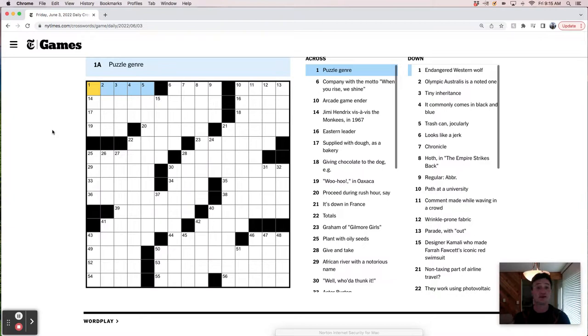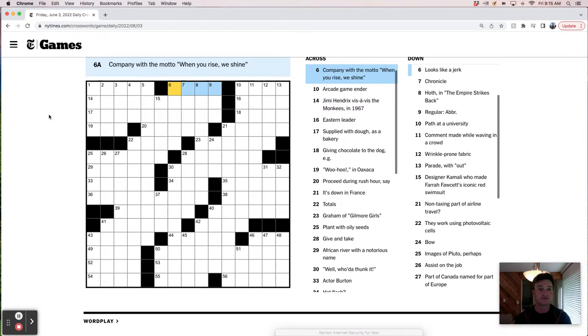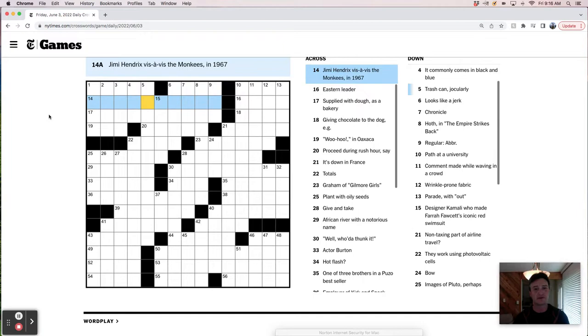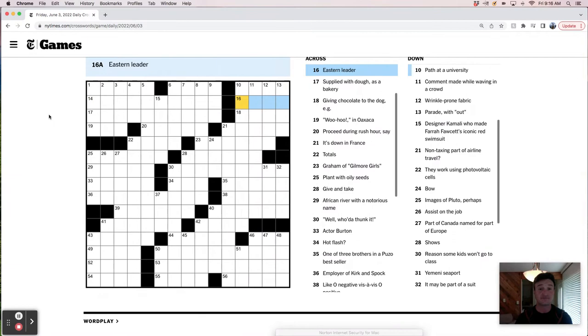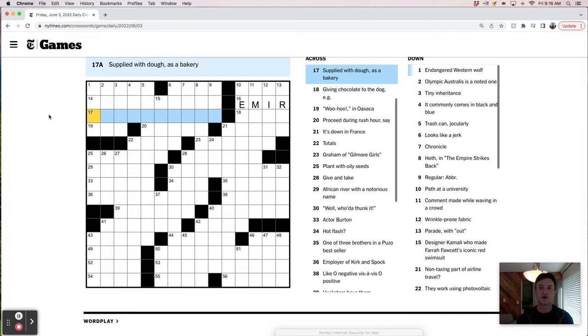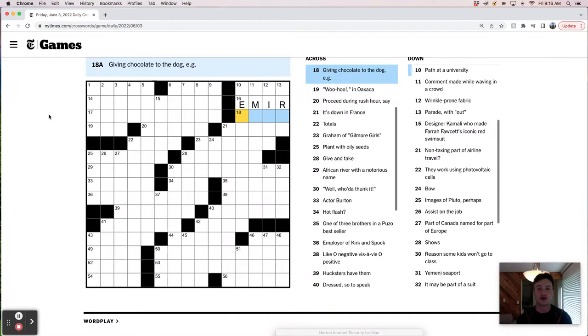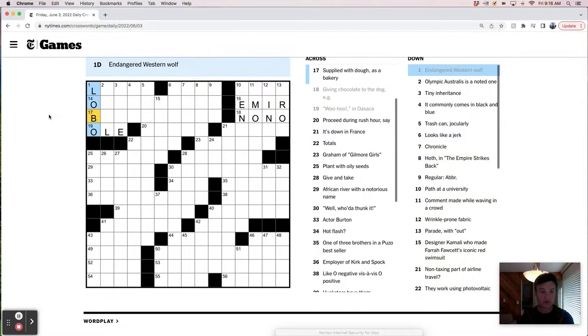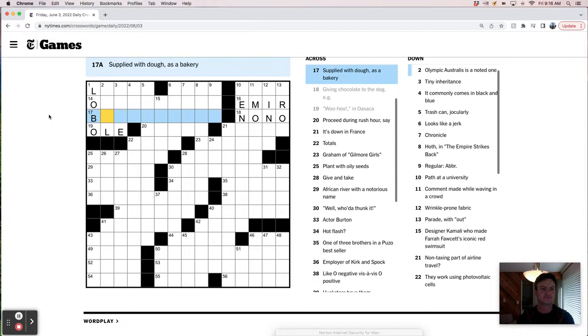Puzzle genre. Well, it's not cross. Company with the motto, when you rise, we shine. I don't know. Arcade game ender. Like, arcade game ender. I mean, hmm. Is it tilt, maybe? Like, is that what it is? I don't know. Jimi Hendrix vis-a-vis the Monkeys. Eastern leader. That's probably Emir. Supplied with dough as a bakery.